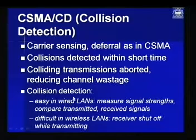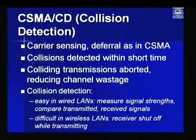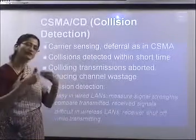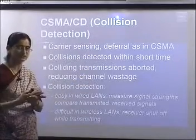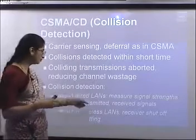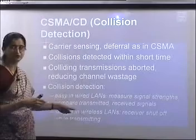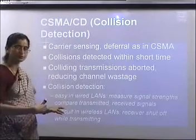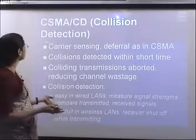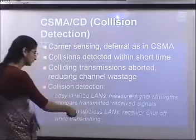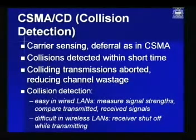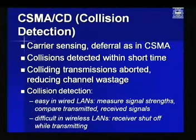Collision detection in a wired LAN is straightforward: you monitor received signal strength while transmitting. If the received strength is higher than what you are transmitting, another transmission is in progress — indicating a collision. In wireless LANs this is more difficult because the receiver typically shuts off while transmitting, and additional problems arise from the nature of the wireless medium.